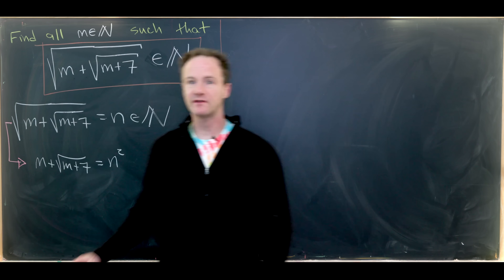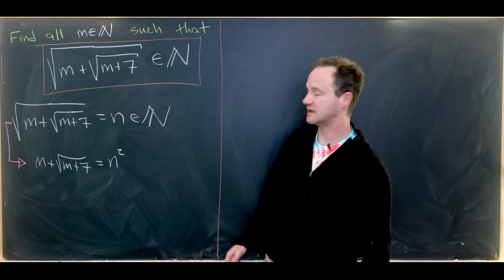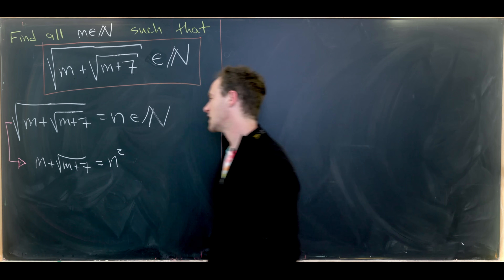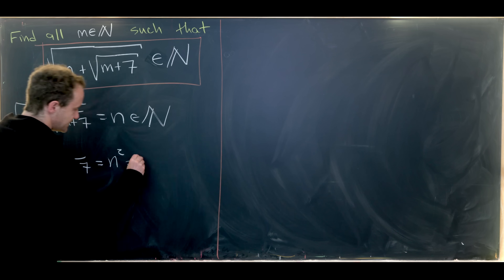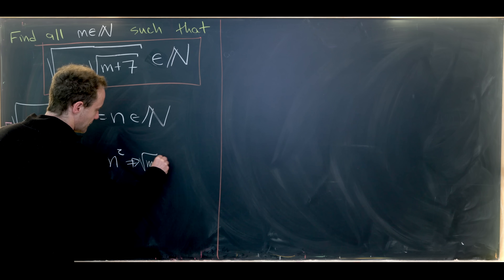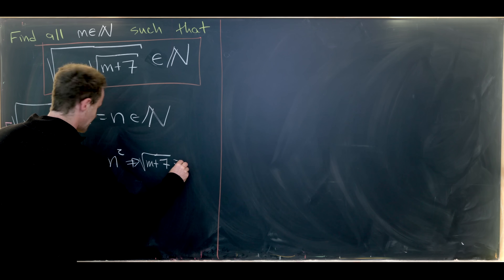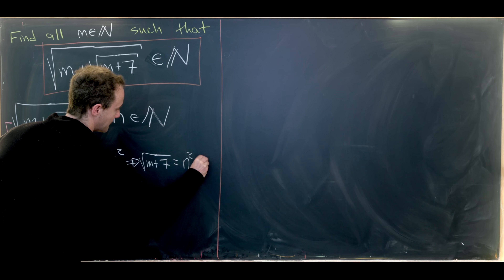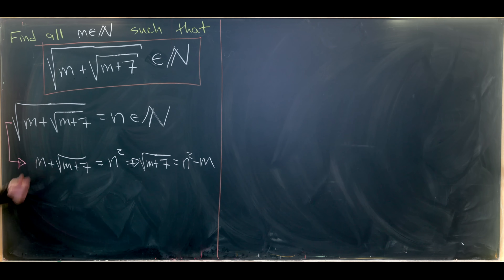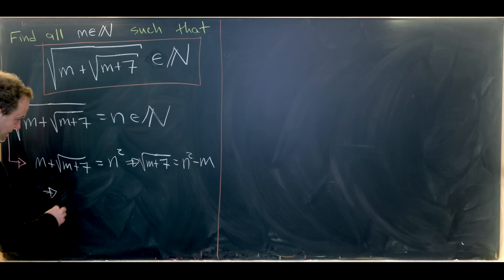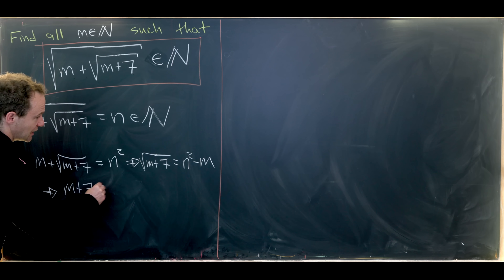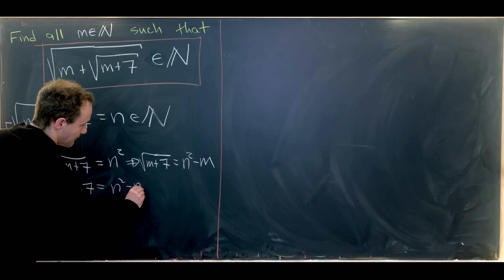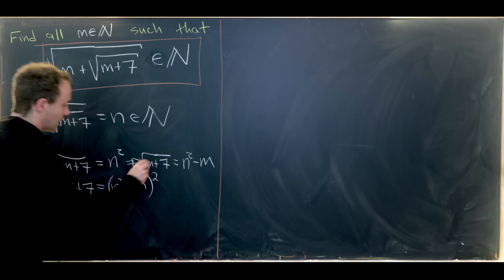We've still got another square root left that we'd probably like to get rid of. We can do that by moving things around. Notice this means that the square root of m plus 7 is the same thing as n squared minus m. And now we can square one more time to leave this with m plus 7 equals n squared minus m, quantity squared.